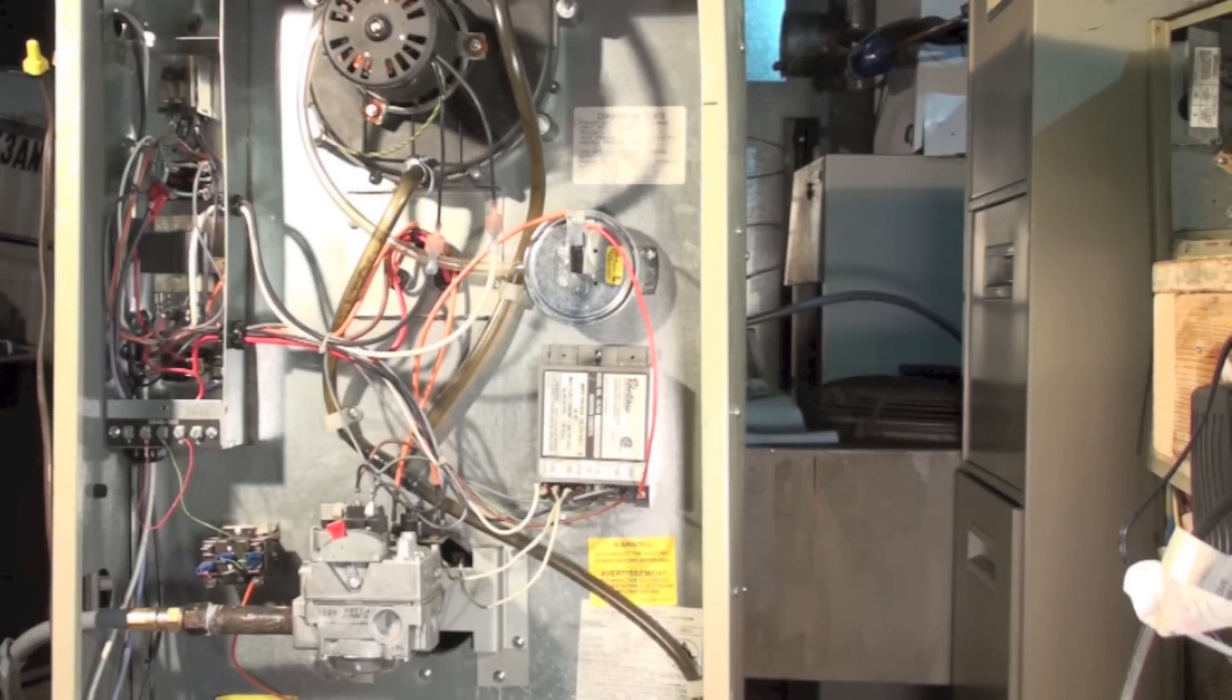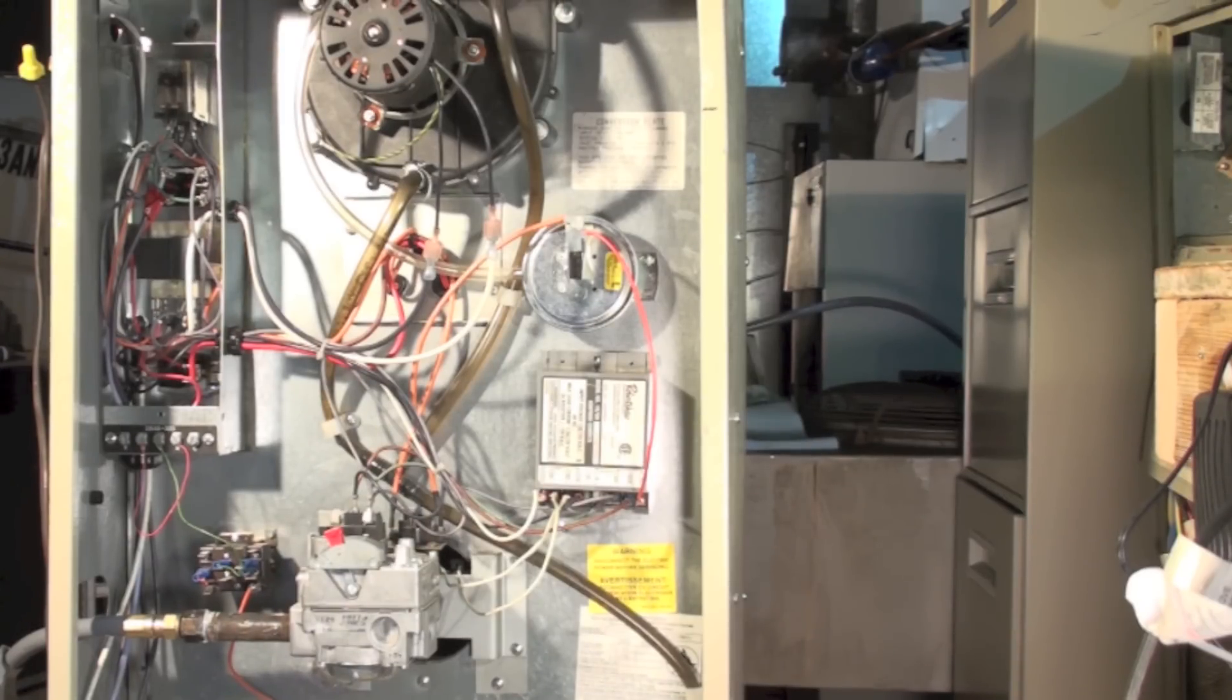Okay, this furnace here is the old Coleman CGU model. It used the drum heat exchanger. It was actually a high efficiency furnace. I think it was their first high efficiency furnace. It's actually just kind of a modification of some of their older furnaces.